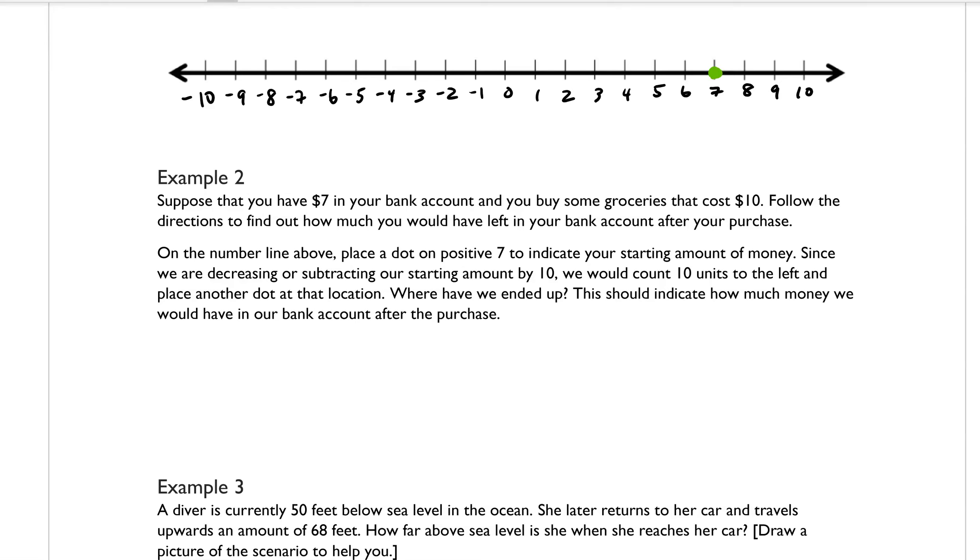Since we are decreasing or subtracting our starting amount by 10, we would count 10 units to the left and place another dot at that location. So I'm here at 7 and I'm going to move over 1, 2, 3, 4, 5, 6, 7, 8, 9, 10. And then that is my new location.